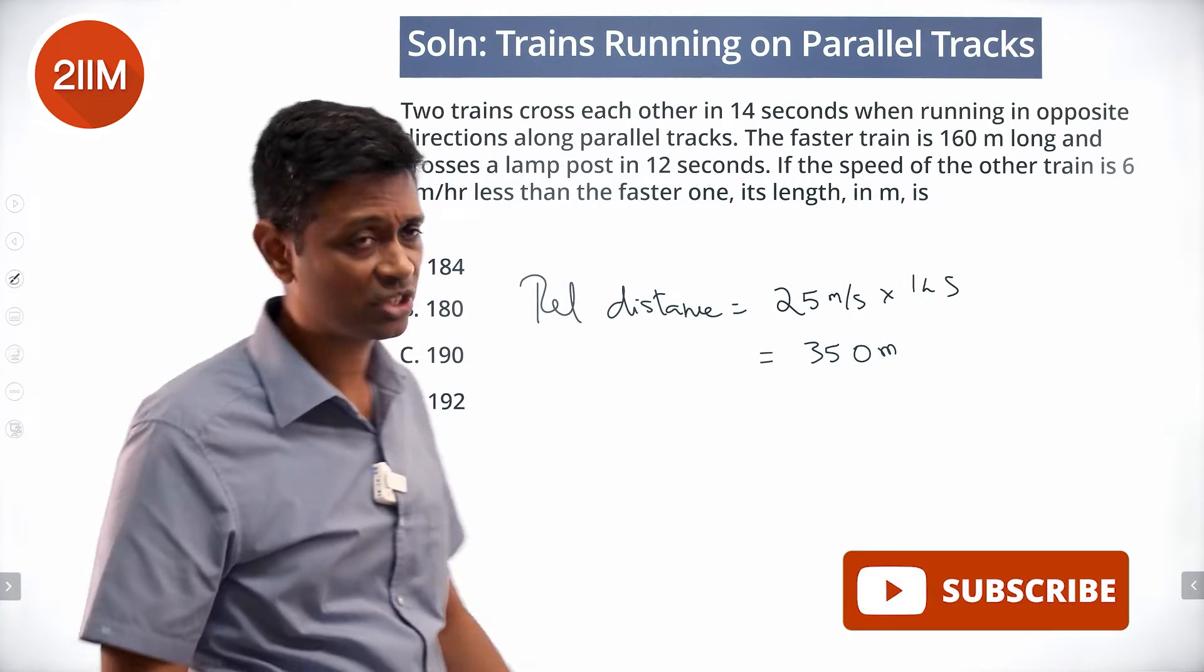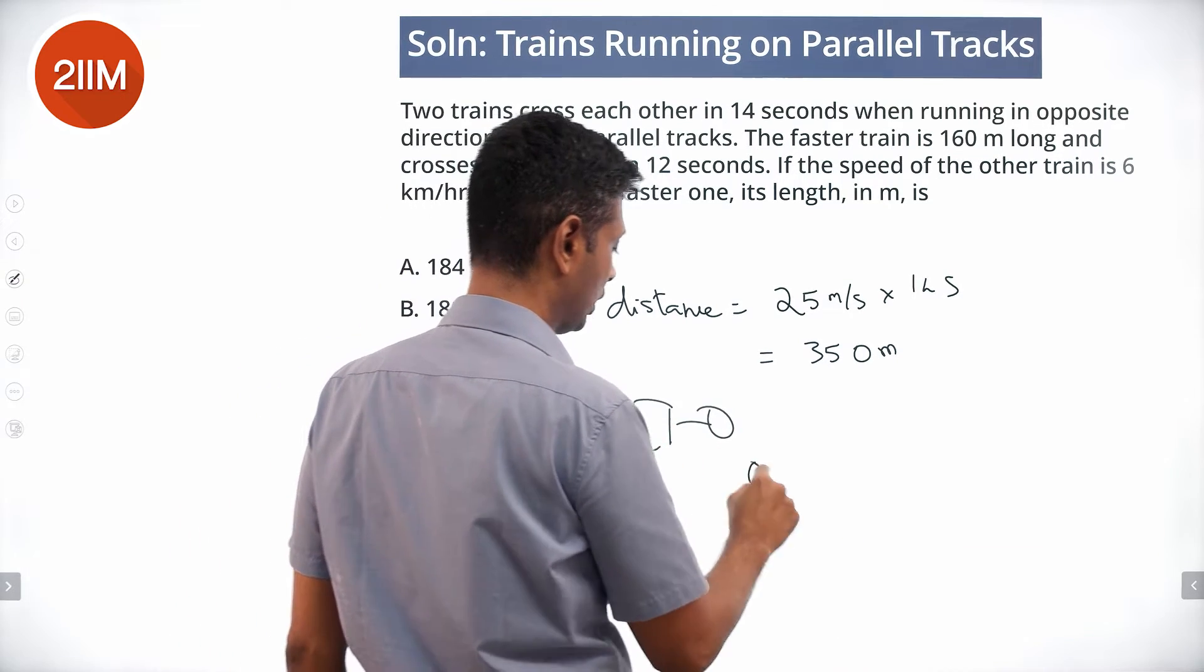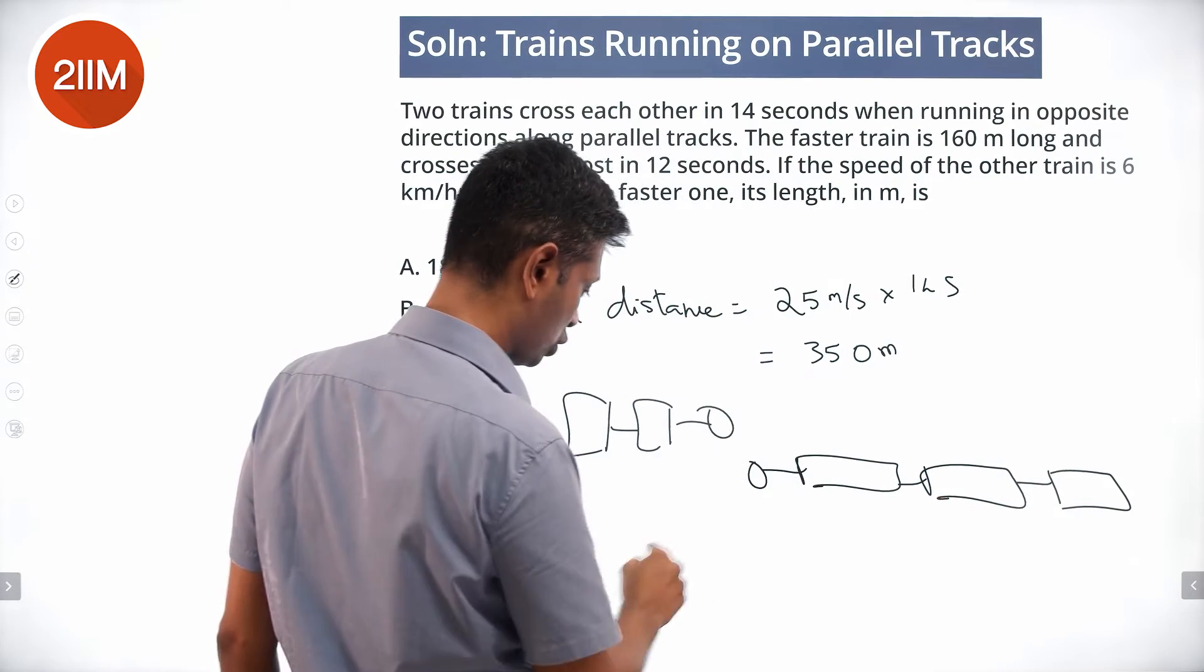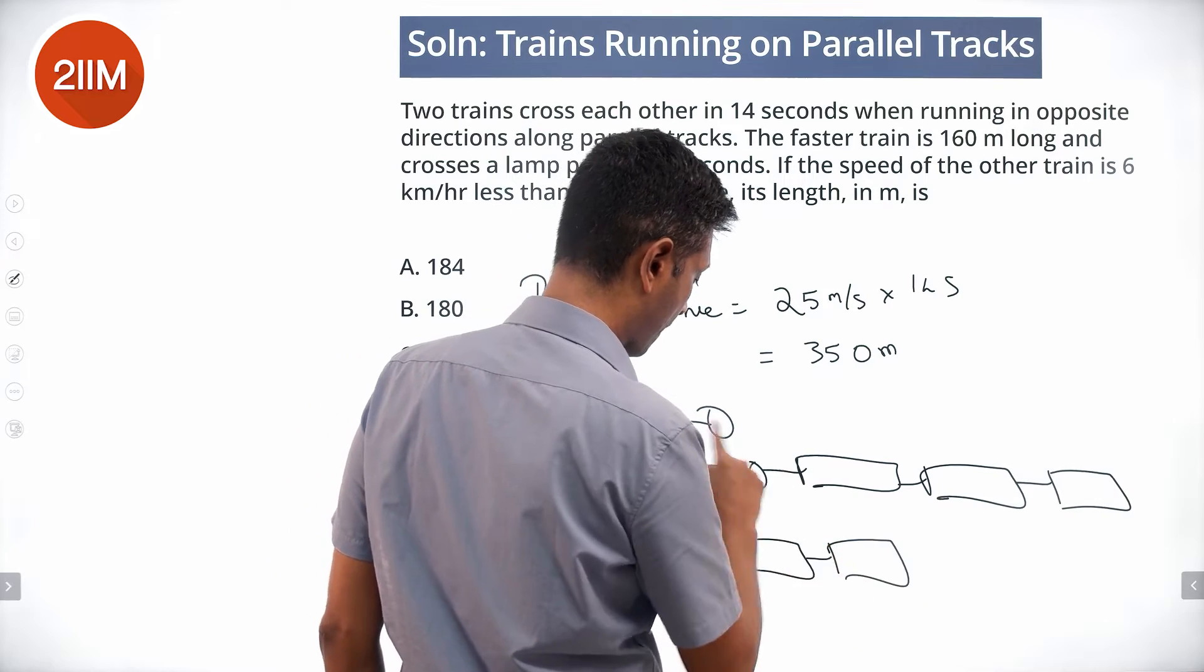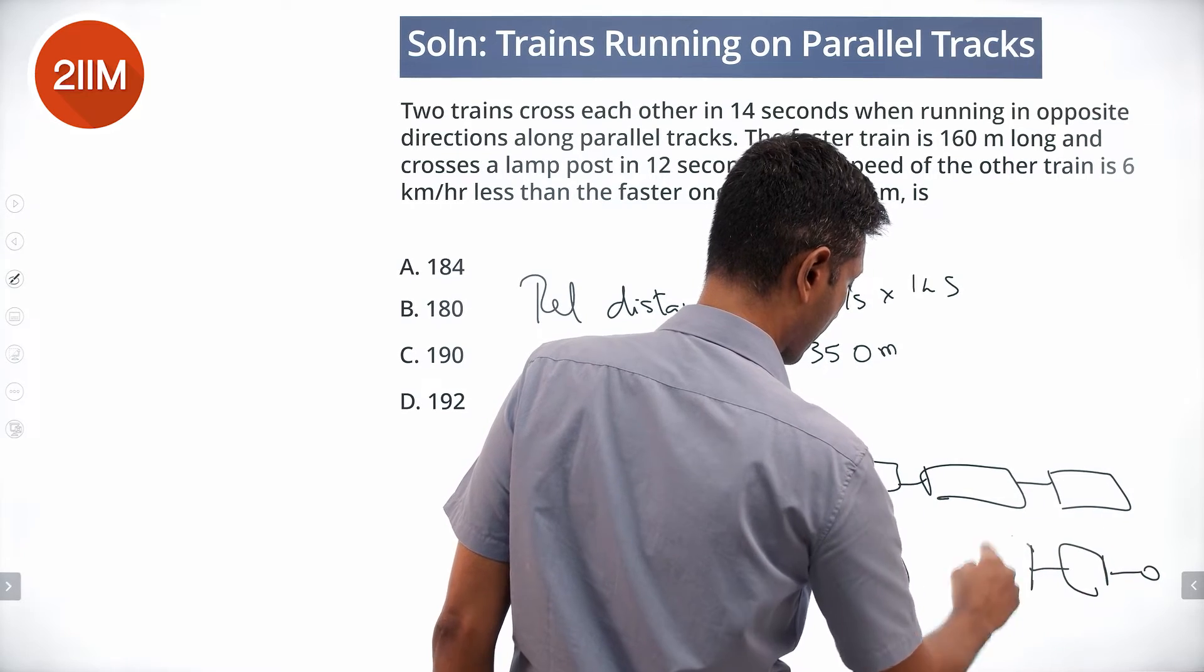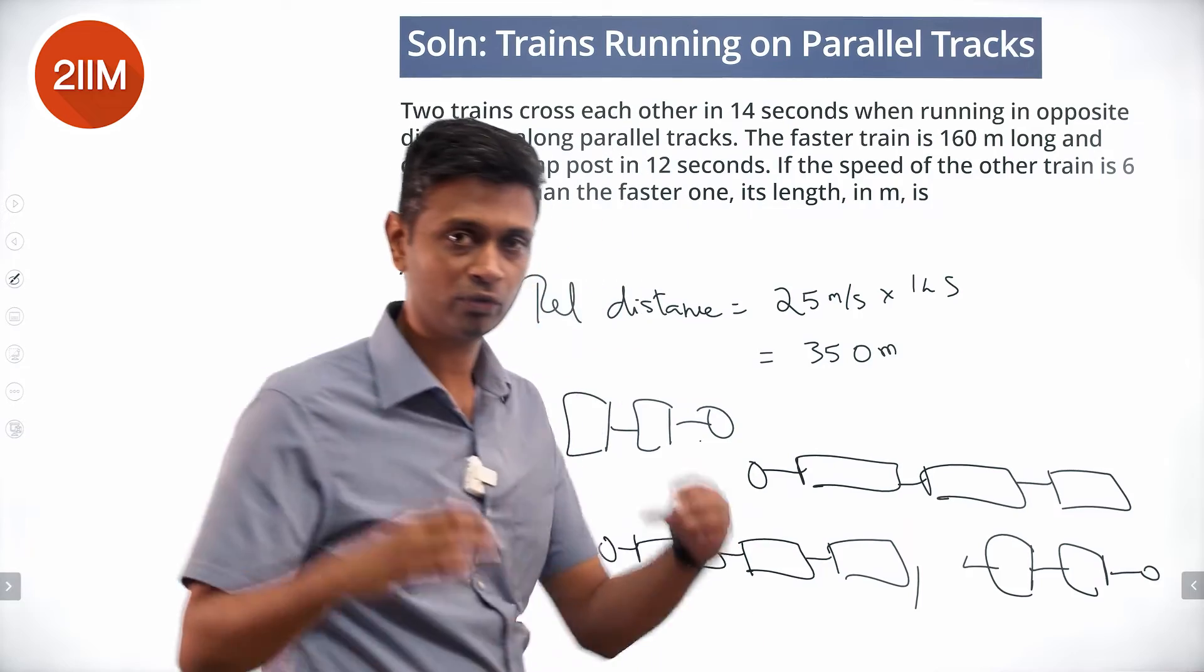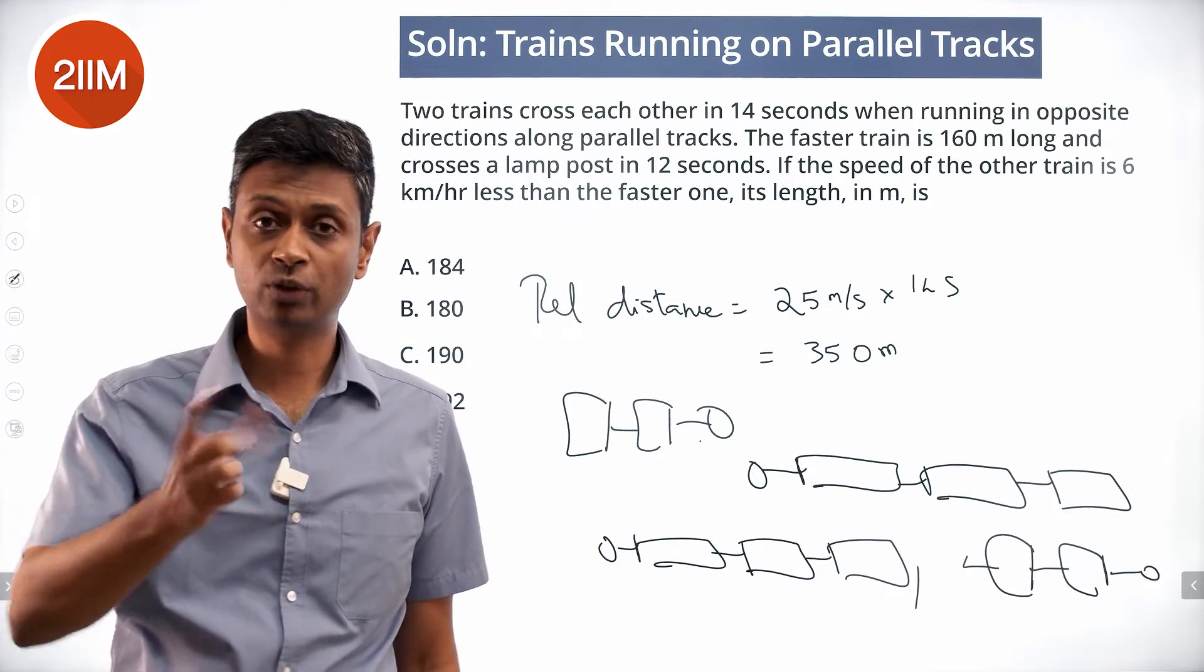The first train is 160 meters long. The relative distance when they are crossing each other, this should have come somewhere here, crossed over to this point. From a point like this they have crossed over. Relative distance is the sum of the lengths of the two trains.